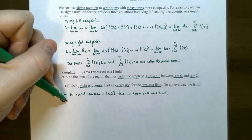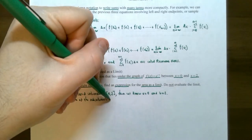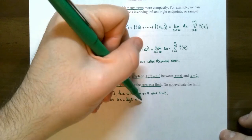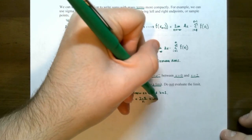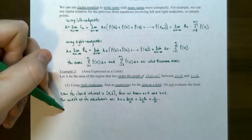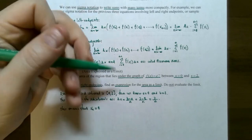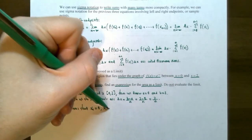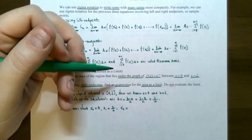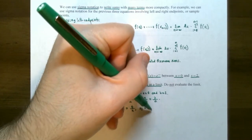The width of the subintervals is always denoted by delta x, and it's b minus a divided by n, so we'll have 2 minus 0 divided by n, which is 2 divided by n. So the width of each rectangle or subinterval is 2 over n. This means x sub 0 equals 0, x sub 1 equals 2 over n, x sub 2 equals 4 over n, x sub 3 equals 6 over n, and so on.